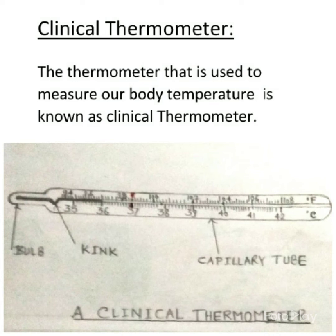This kink helps us to read the thermometer after taking it out from the patient's mouth. To reuse the thermometer, it has to be given a slight jerk, which brings the mercury back into the bulb. On the thermometer, both scales are given — degree Celsius and degree Fahrenheit. There is one red mark which shows the normal temperature: 37 degree Celsius and 98.6 degree Fahrenheit.